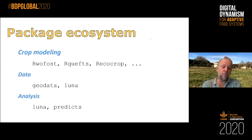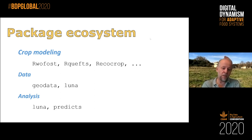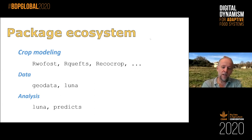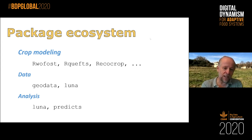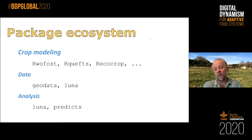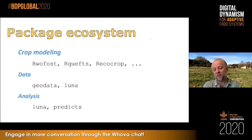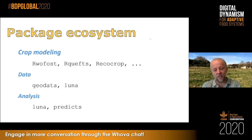This includes packages for crop modeling: R-WOFOST and R-QUEFTS, both available on CRAN; and R-EcoCrop, available on GitHub. There's also a package that helps you get access to data in your script through a one-line request, increasing reproducibility. That includes the geodata package and the Luna package that Ani will talk about.